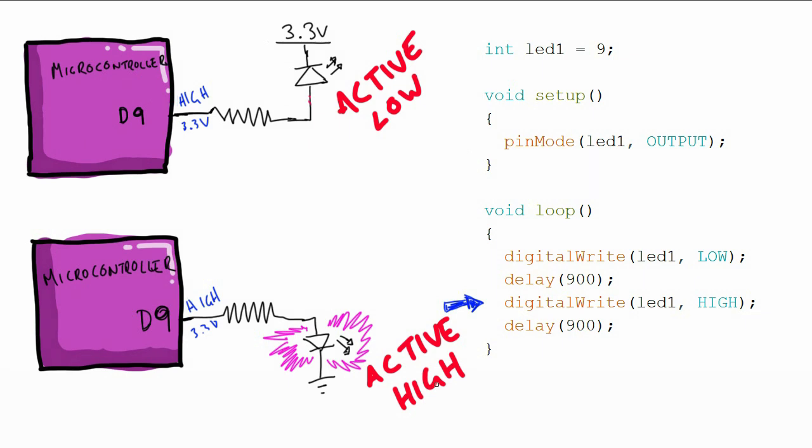This one here is active high. When the pin is high, it is on. When the pin is low, it is off.